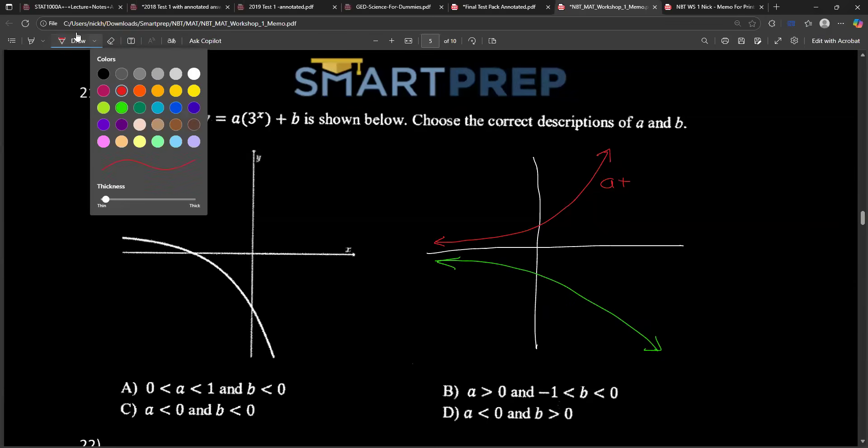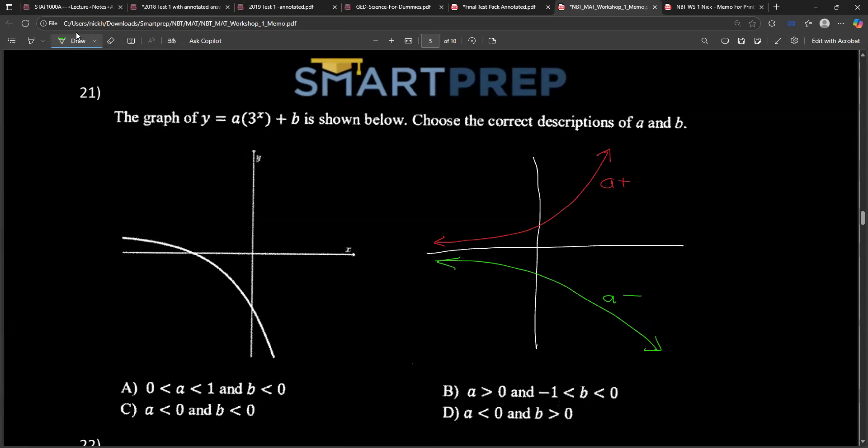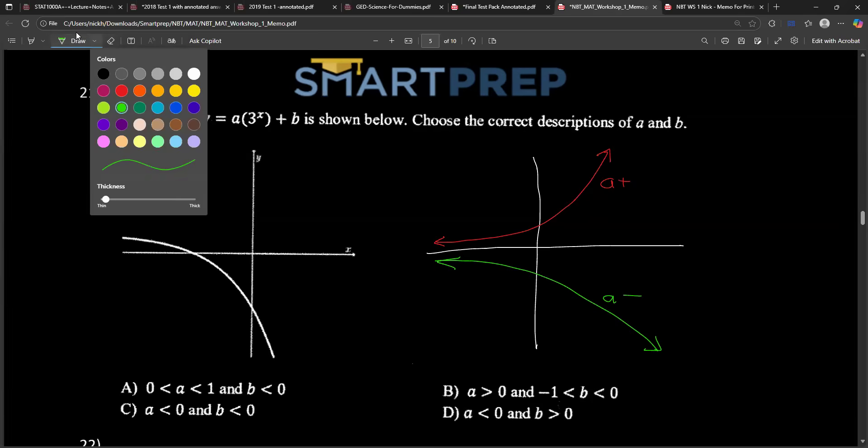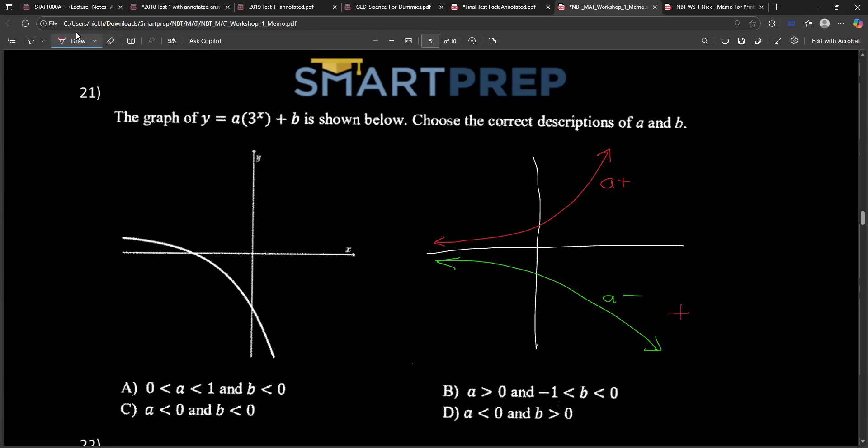If a is negative, our exponential graph goes from the normal thing like this to this. So this is where a is positive and here is where a is negative. We're looking at c and we're looking at d. Now it's shifted up. How do we shift this graph up? We can simply put b must be positive, because if I make this plus b it'll shift this up by b. So b has to be positive and a has to be negative, and that is D. Our answer here is D.